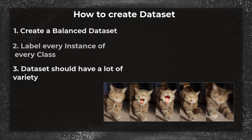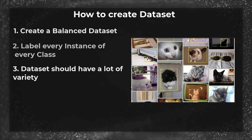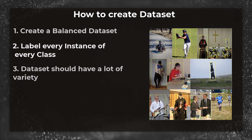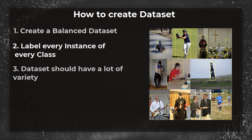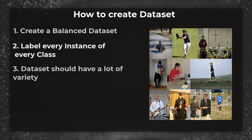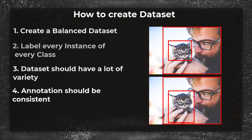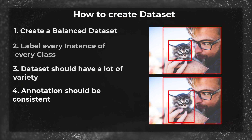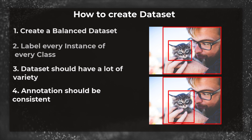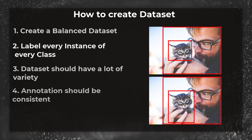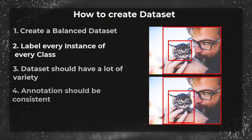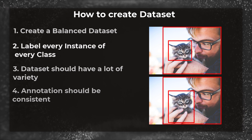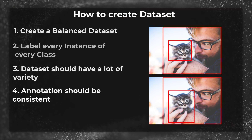Third, make sure your dataset has a lot of variety. This could mean including different breeds of cats and dogs; the people in the dataset should be wearing different kinds of clothes and have different body shapes; and images should be taken under different lighting conditions. The higher the variance of your dataset, the richer information it has. Fourth, the annotation should be consistent. For example, there are two ways of labeling a partially visible cat — your bounding box could cover only the visible part or the entire cat. Both are valid, but you must be consistent. Inconsistent bounding boxes can create a lot of problems.